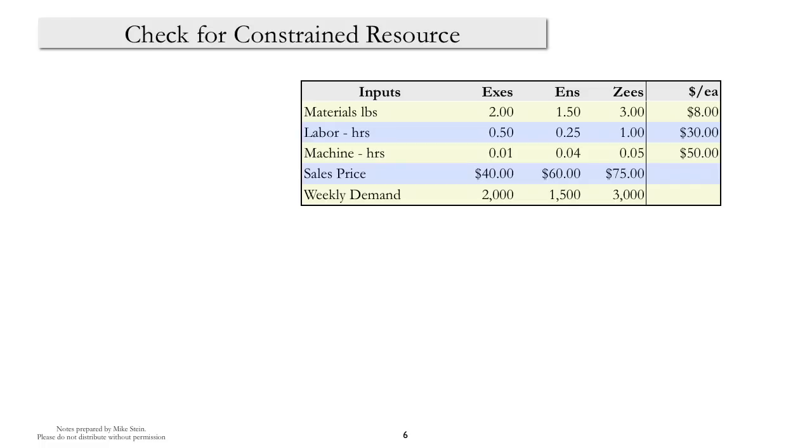Next, we want to check whether or not we actually do have a machine hour constraint. And here, we're going to look at the machine hours each of the X's, N's, and Z's that we manufacture use, and the demand for those products.